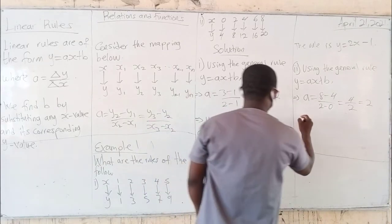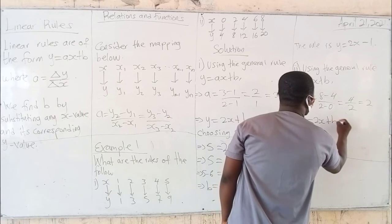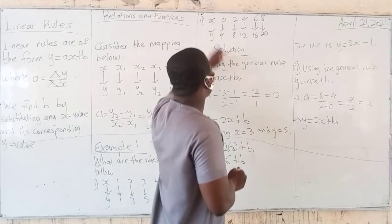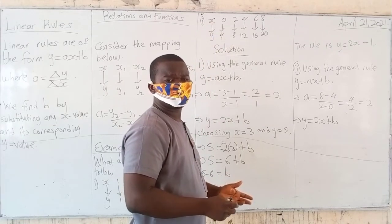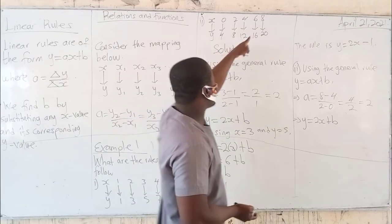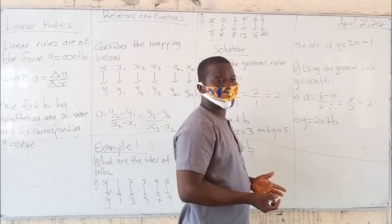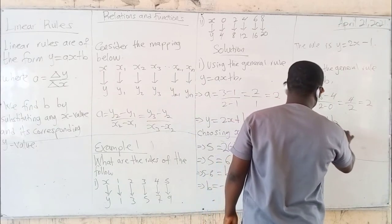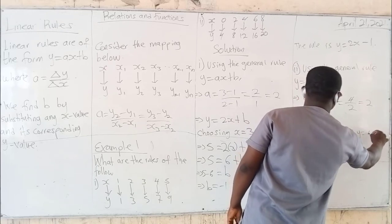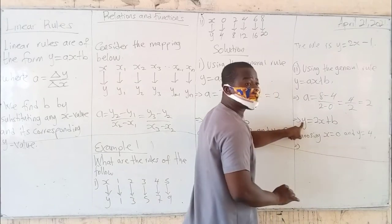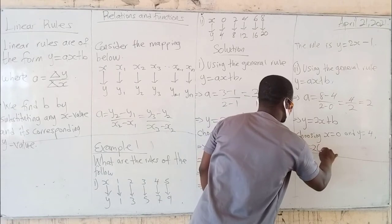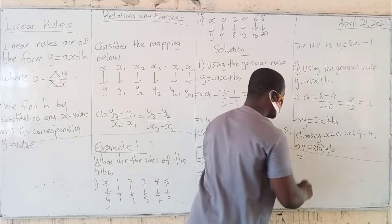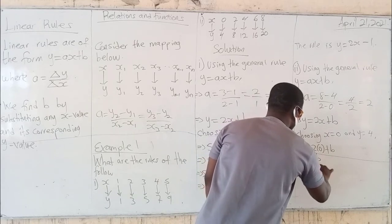Fantastic. So another insight is that Y is going to be equal to 2X plus B. Now, choose the same pair of numbers — choose X equals 0 and Y equals 4. So in place of Y I'll put 4, and in place of X I'll put 0, plus B. What does that mean? 2 times 0 is 0, we have 4 is simply equal to B. So B is equal to 4.